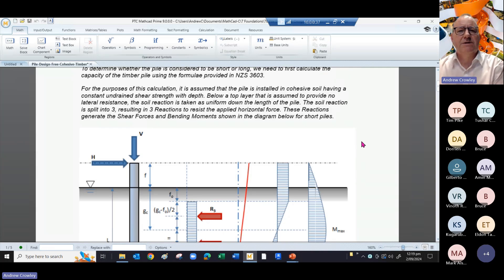For the purposes of the calculation, we're assuming it's installed in cohesive soil having a constant undrained shear strength with depth. We assume that part of the top layer provides no lateral resistance down the length of the pile.